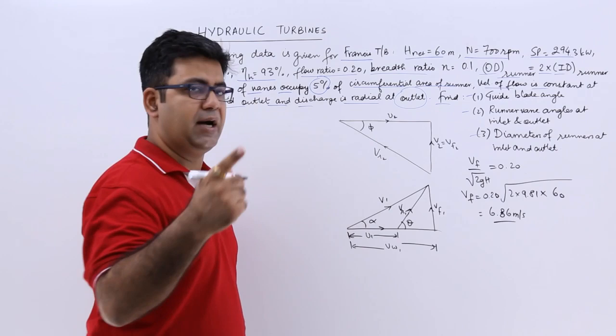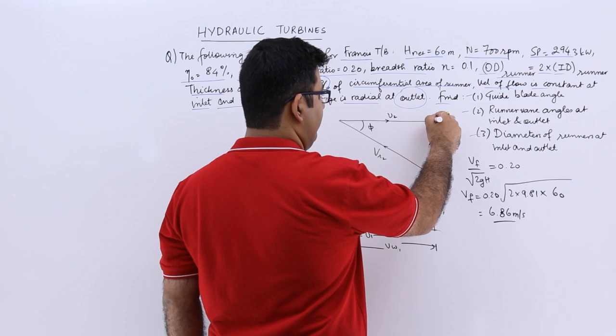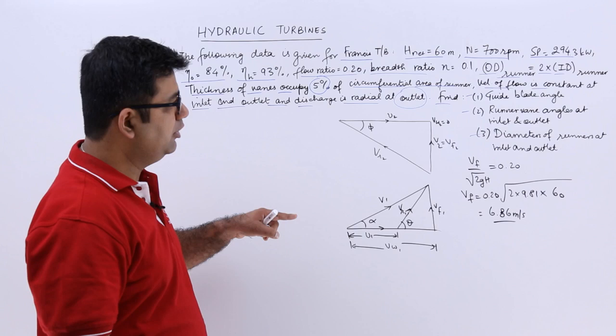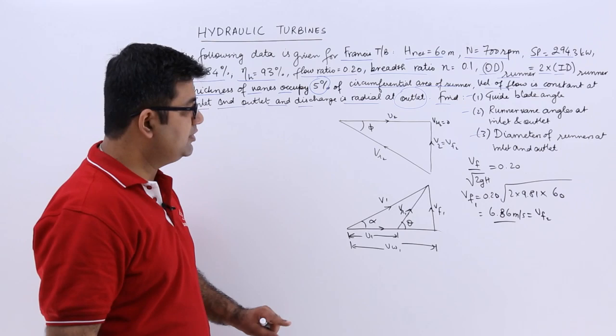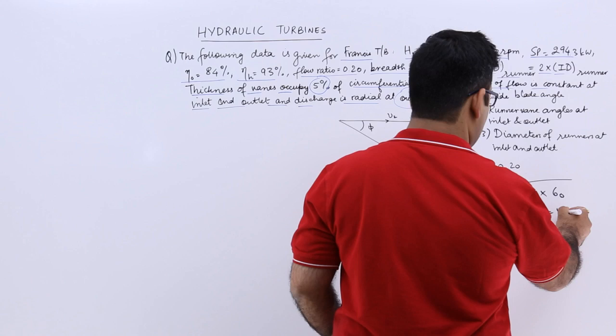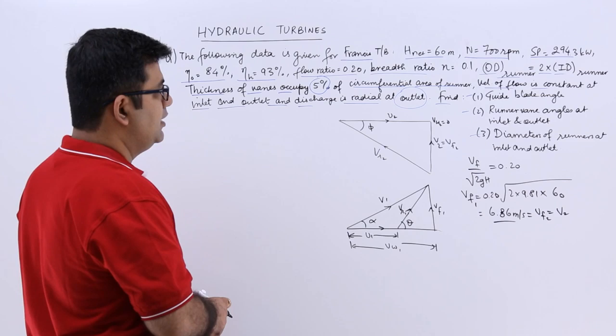Since discharge at outlet is radial, V2 equals VF2 and VW2 equals 0. Also, velocity of flow is constant at inlet and outlet, so VF1 equals VF2 equals 6.86 m/s.